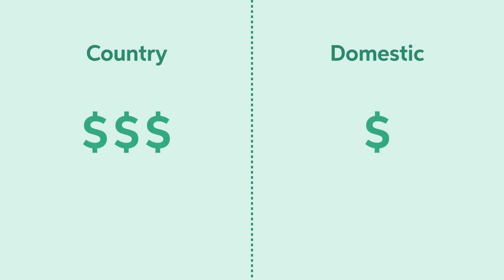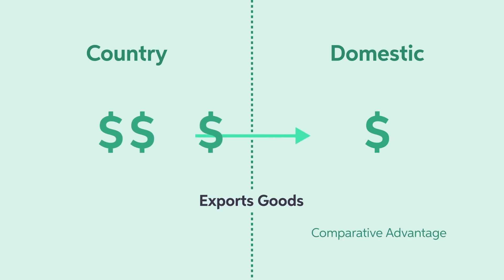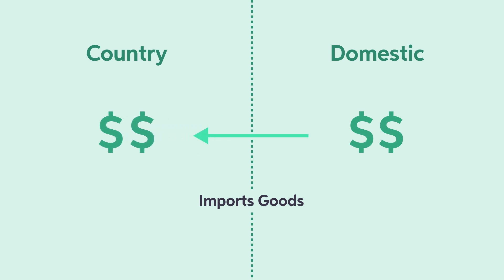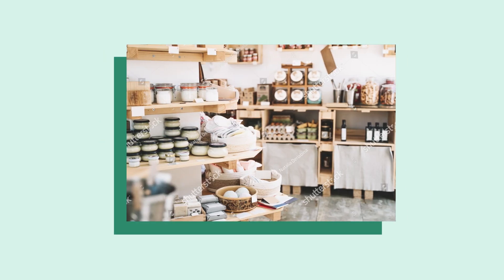When the domestic price is lower than the world price, the country has a comparative advantage and it exports goods. If the domestic price is greater, the country imports goods as it has no such advantage. For a small economy that can't affect the world price of goods, no buyers will pay more domestically for a good they can buy cheaper in world markets. Similarly, no seller will accept less for a good domestically if they can command a higher price elsewhere.